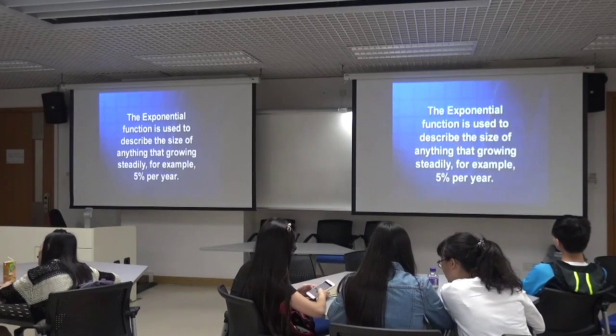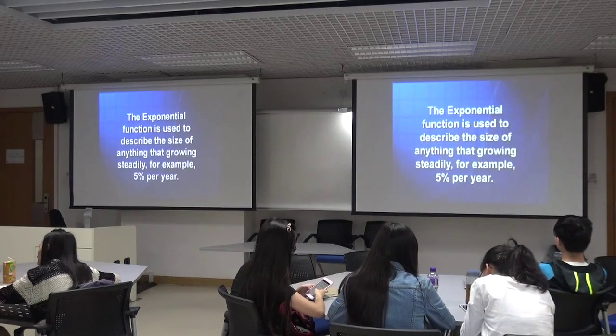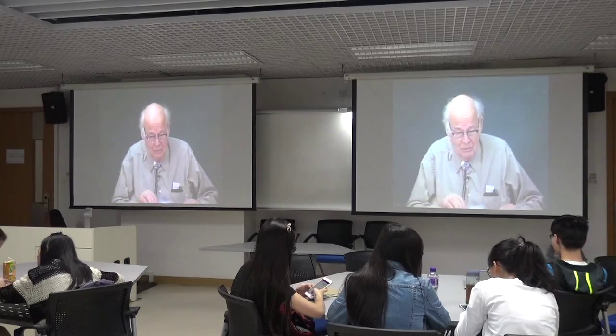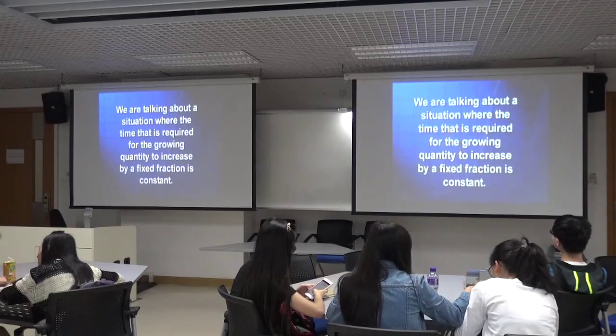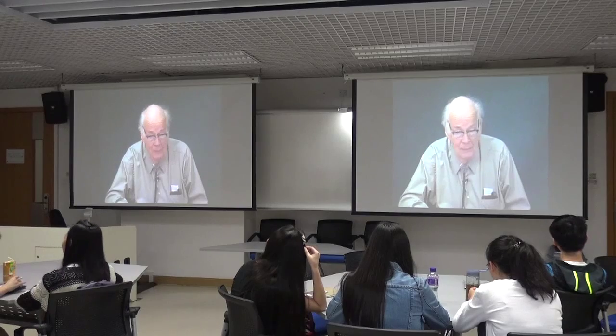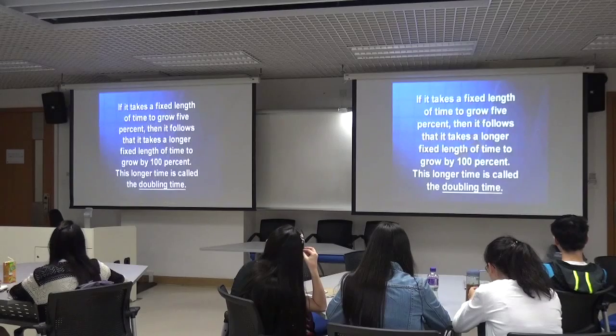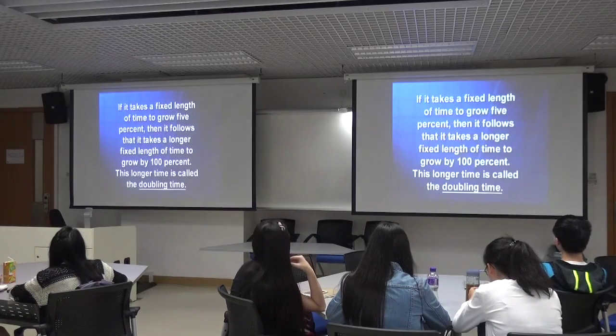The exponential function describes the size of anything growing steadily. If something grows five percent per year, you write the exponential function to show how large that growing quantity is year after year. We're talking about a situation where the time required for the growing quantity to increase by a fixed fraction is constant — five percent per year, the per year being a fixed length of time.